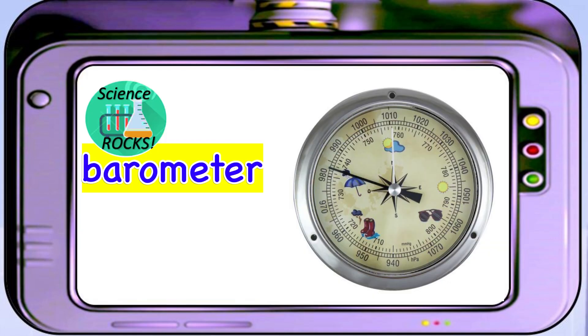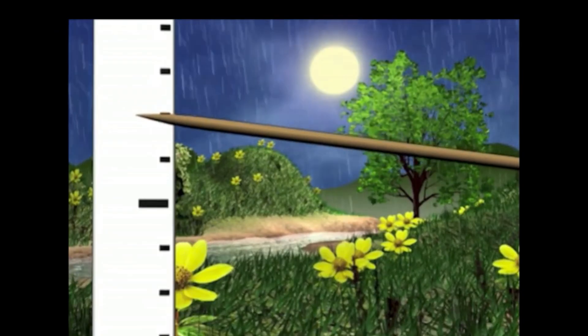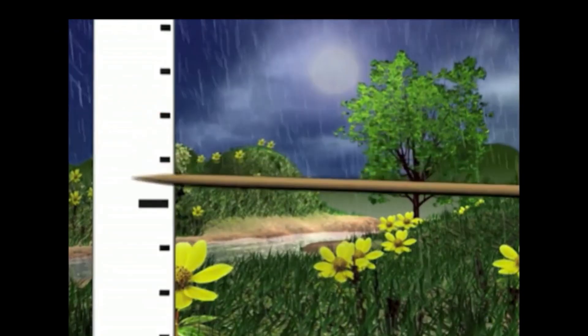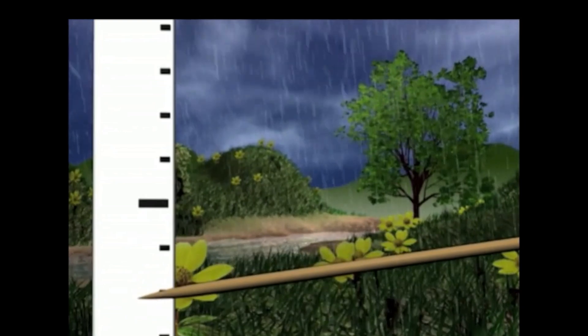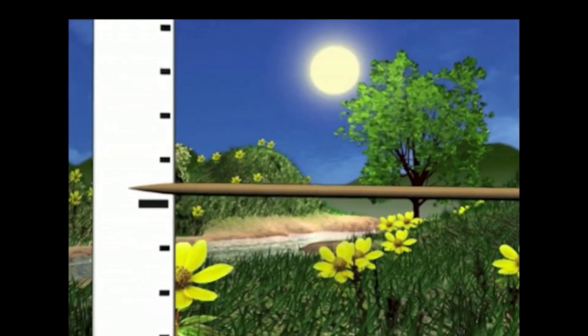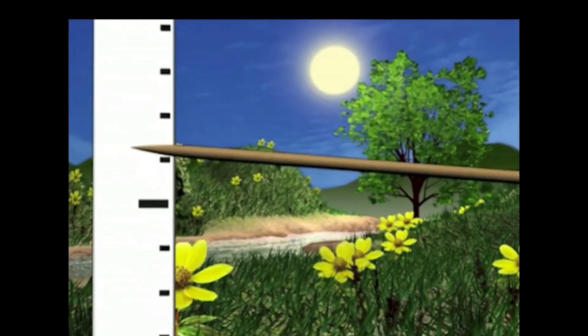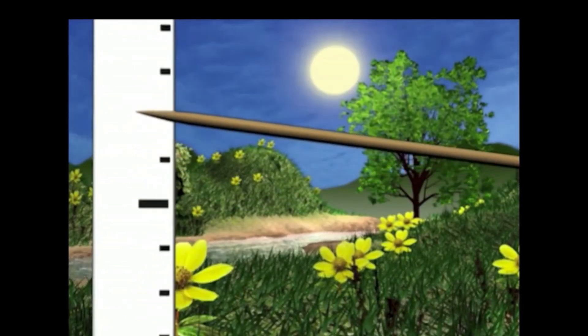A barometer is an instrument that measures air pressure. Lower pressure predicts wind and rain. When the air pressure is up,